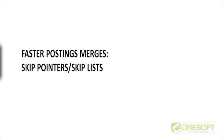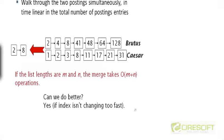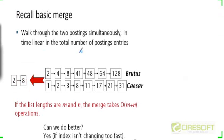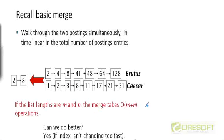Let's see how to improve the postings list merges discussed in the previous chapter by adding what are called skip pointers. The basic merge operation walks through two postings lists simultaneously with two pointers, in time proportional to the sum of the lengths of the two lists. If the lengths are m and n, the walkthrough takes time O(m + n).